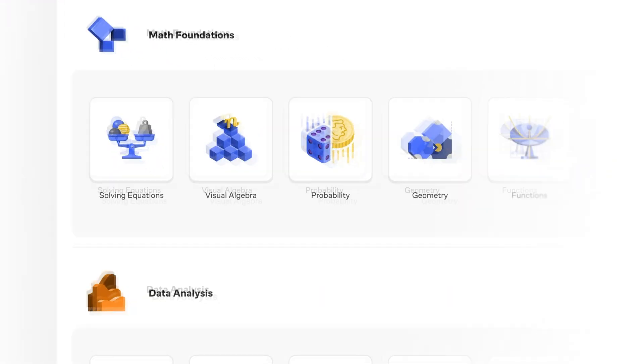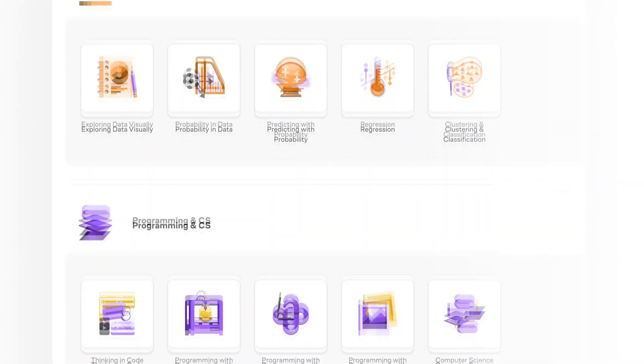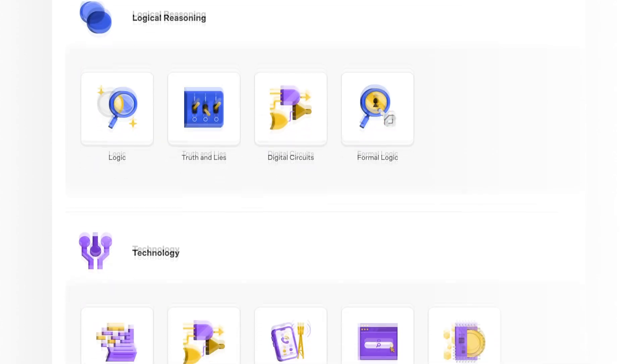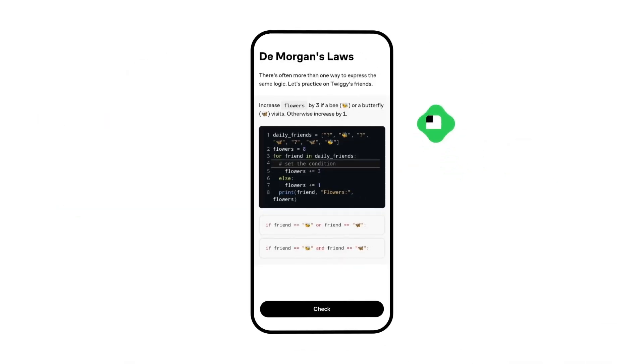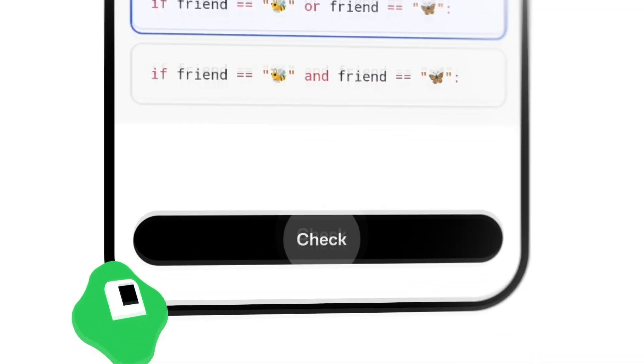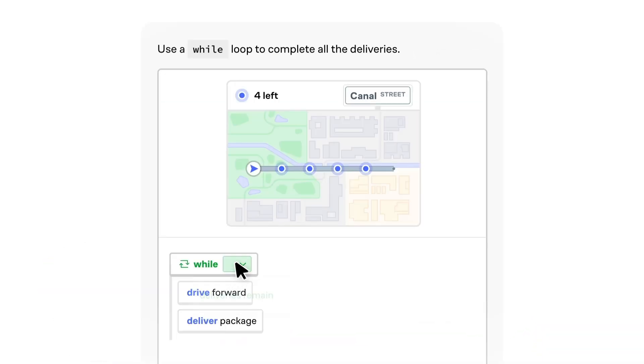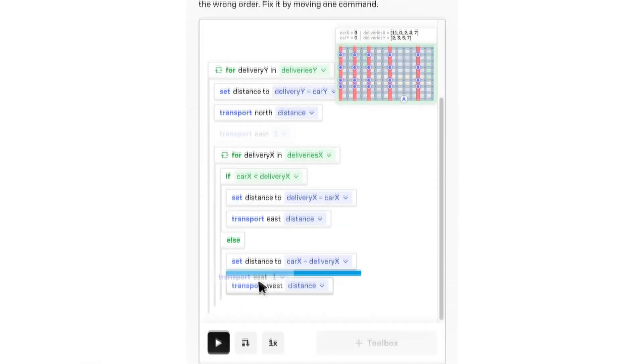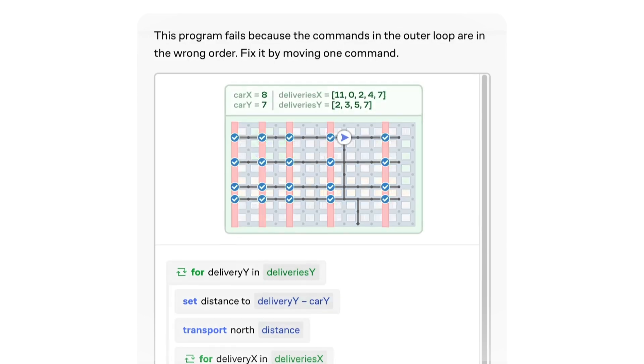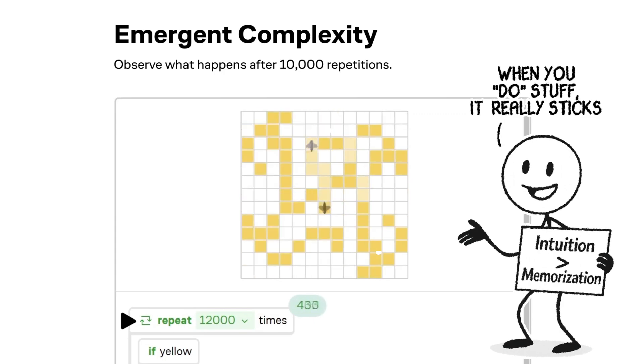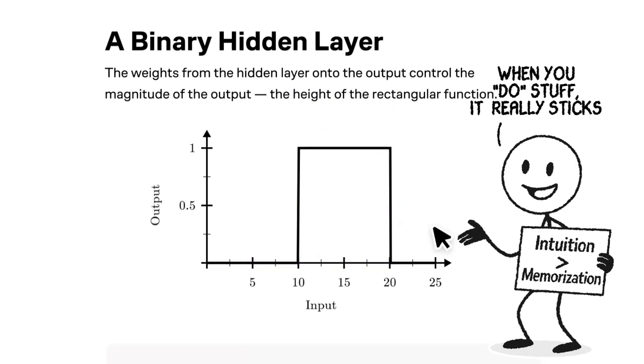Brilliant helps you get smarter every day with thousands of interactive lessons in math, science, programming, data analysis, and AI. But what really sets it apart is how you learn. Instead of just watching someone explain a concept, you're solving problems, experimenting with ideas, and learning by doing. It's all interactive, so you're not just memorizing facts, you're building real intuition. And that kind of active learning has been shown to be up to six times more effective than passively watching videos.